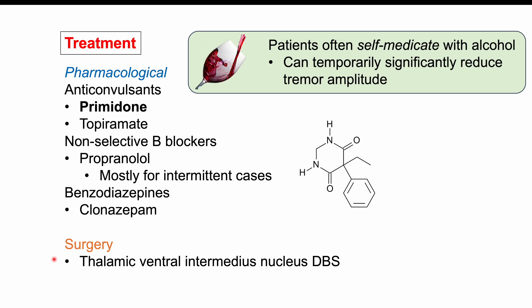In cases where medications have not helped and tremors are refractory to medical therapy, surgery may be employed. These surgeries include thalamic ventral intermedius nucleus deep brain stimulation (DBS) or focused ultrasound thalamotomy. These are options for patients who have not had success with conservative or pharmacological management, especially in very severe cases. As patients get older their severity can worsen, and surgery may be utilized to help with severe arm and hand symptoms.